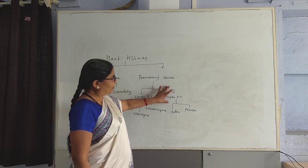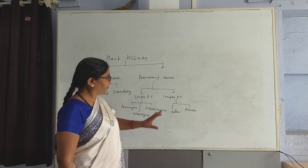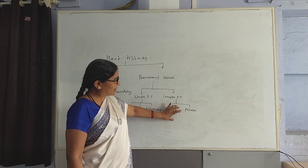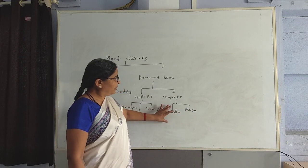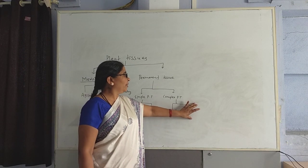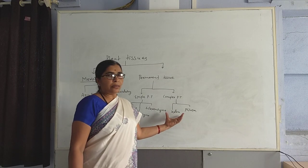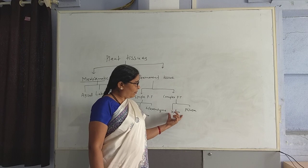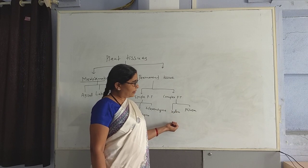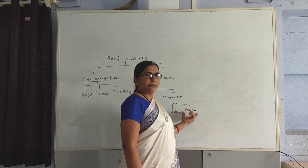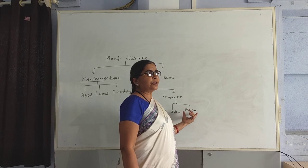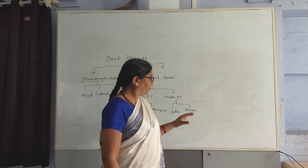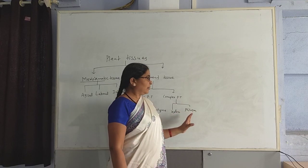Now we will go to complex permanent tissue. Complex permanent tissues are of two types: xylem and phloem. The main function of the xylem is to transport water in plants, and the function of the phloem is to transfer the food prepared by leaves within the plants.